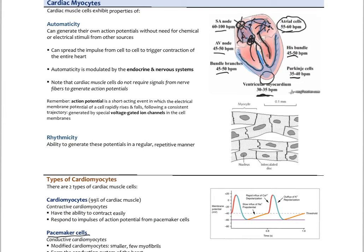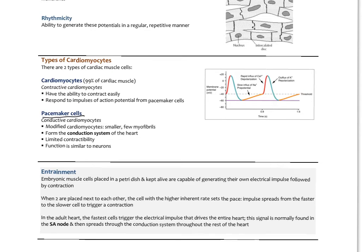We have the pacemaker cells, also called conductive cardiomyocytes — these include the SA node, the AV node, the conducting channels in the atria, through the bundle of His, the interventricular septum, the bundle branches, and in the ventricular wall. These are modified cardiomyocytes — they're smaller, have few myofibrils, and are not really involved in contraction. They form a conduction system in the heart, with function similar to neurons but they are not neurons. The majority of heart muscle are the actual cardiomyocytes, called contractile cardiomyocytes — they have lots of actin and myosin, can contract easily, and respond to action potentials from the pacemaker cells.